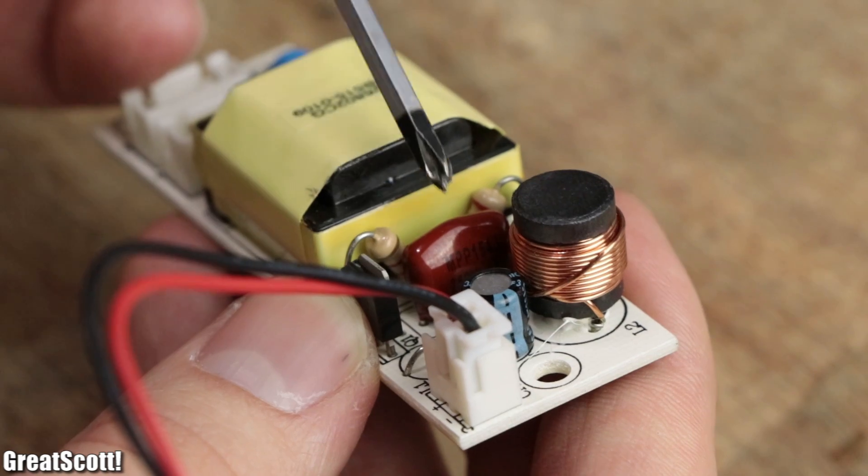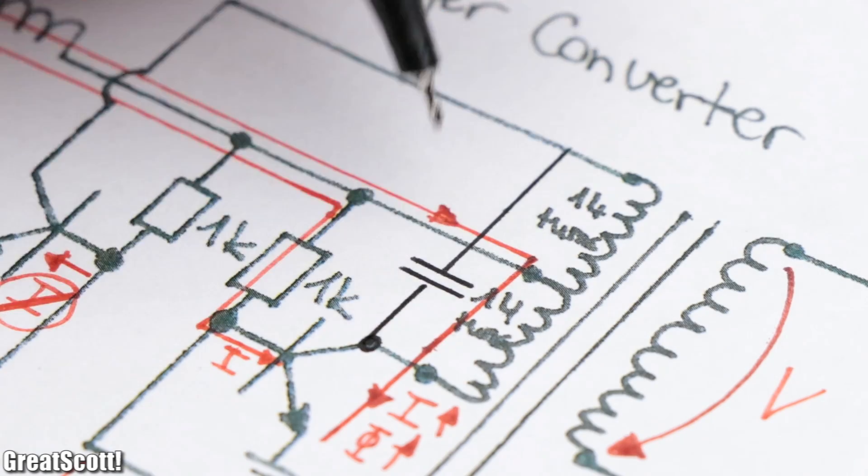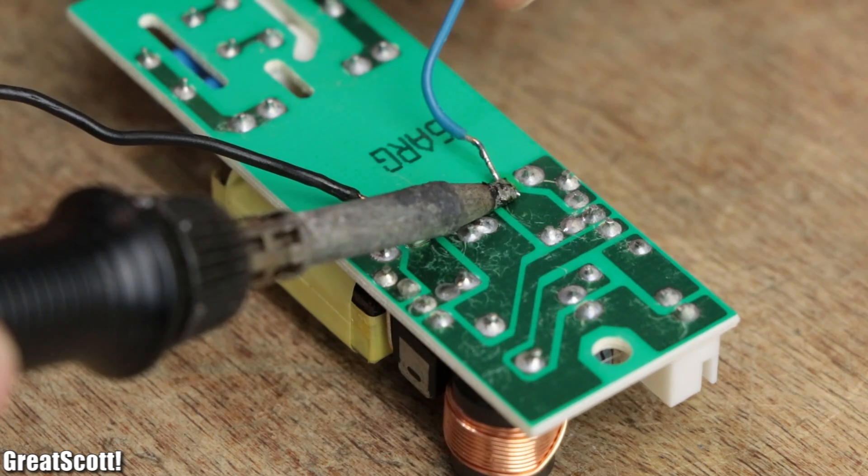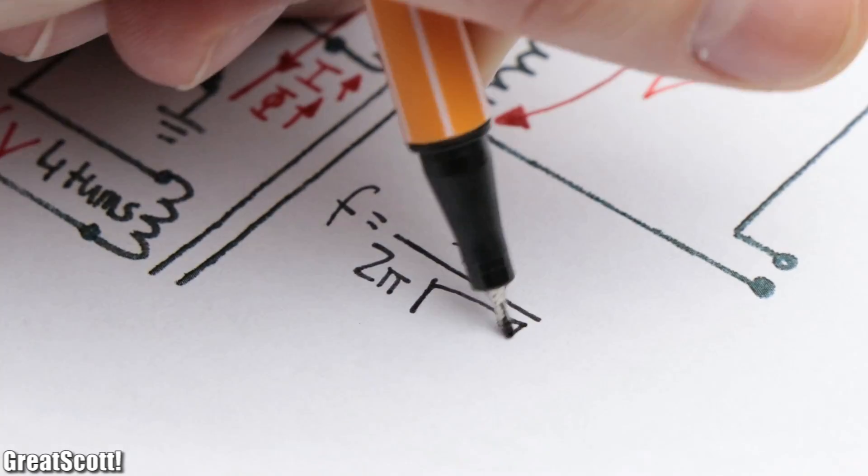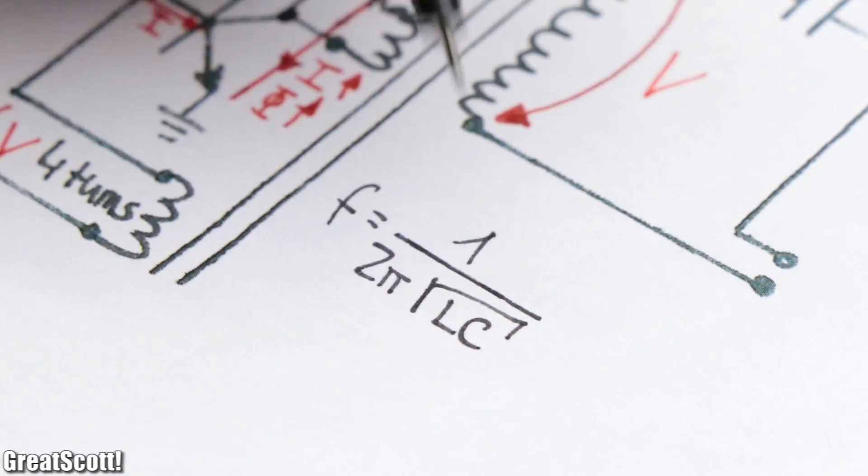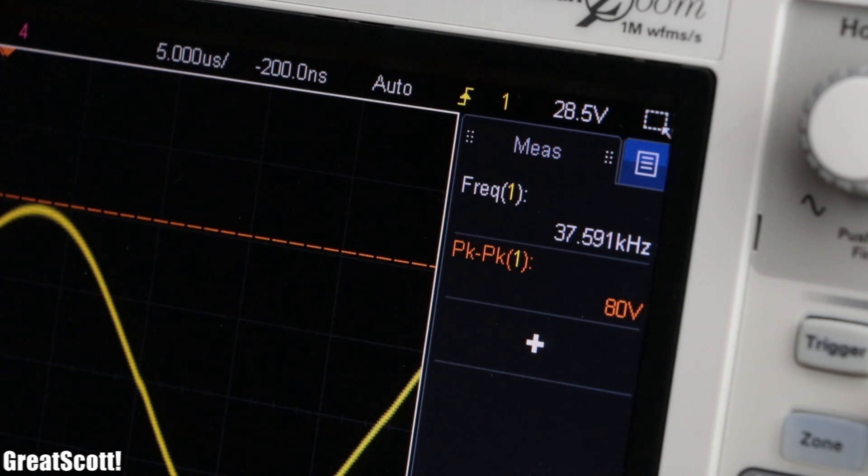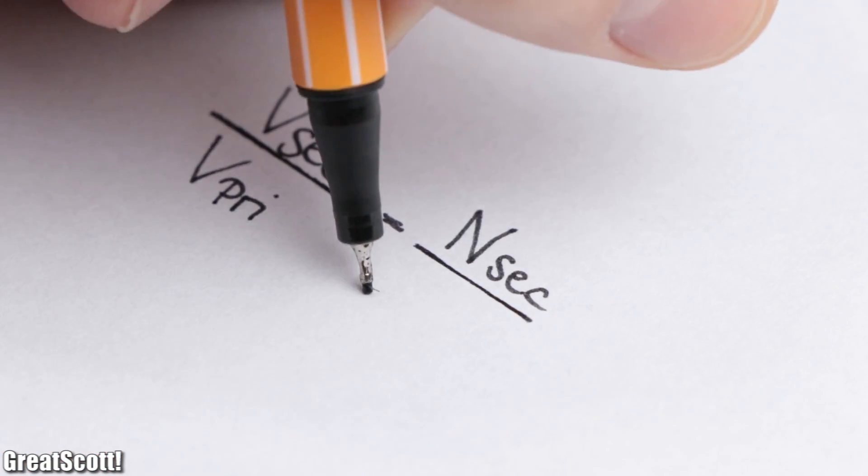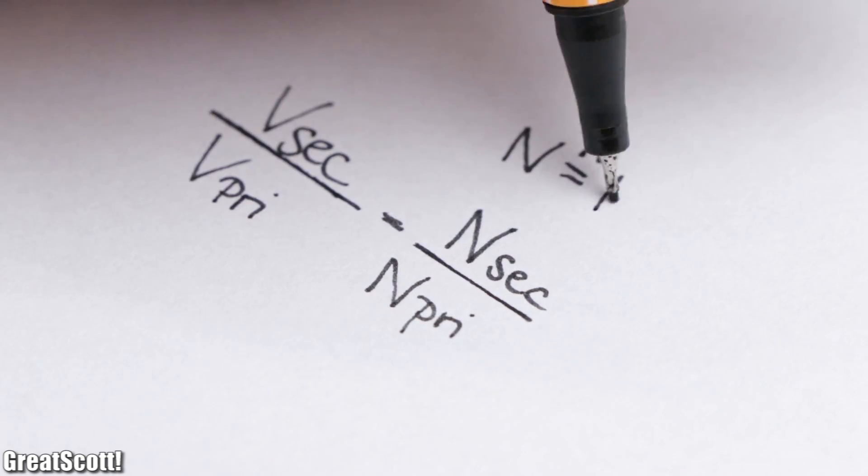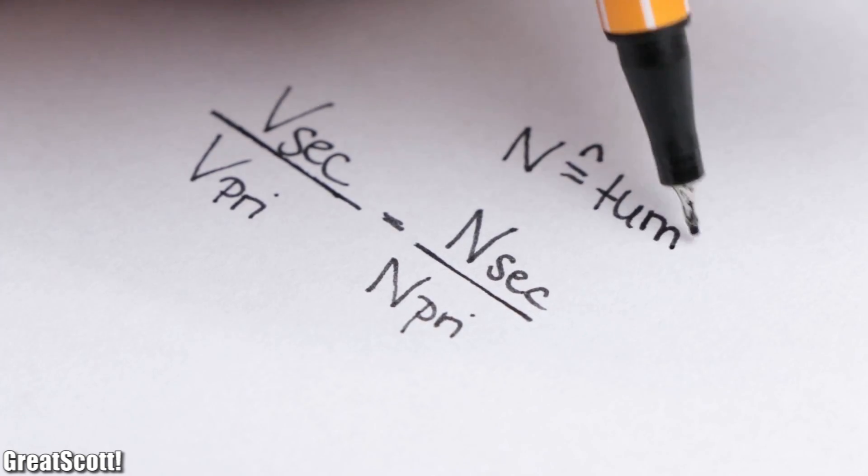And since there is also a capacitor attached in parallel to the primary coil, the created oscillation through the primary is sinusoidal with a frequency determined by the resonant circuit. In this case around 37.5 kilohertz. While all that sounds rather complicated, the output voltage of the transformer is still mainly determined by the turns ratio.